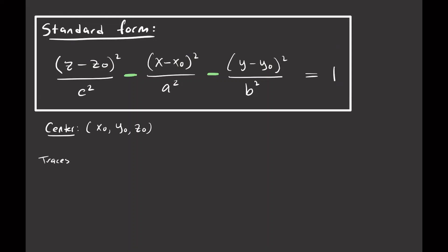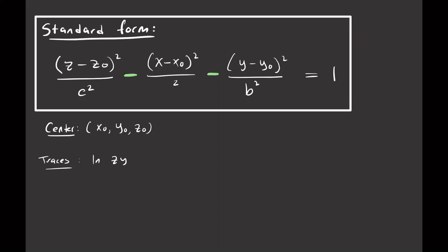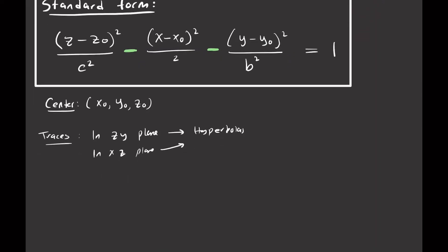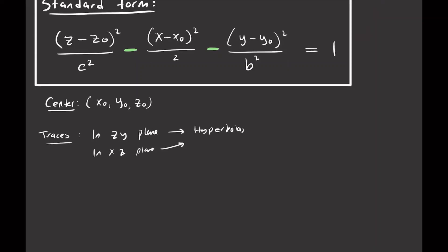Now let's look at the traces. If X disappears from the equation, we get a hyperbola in the YZ plane. Similarly, if Y disappears, we get hyperbolas in the XZ plane. If Z disappears and we look at just X and Y, modifying for the negative signs, the traces in the XY plane are going to be circles or ellipses, depending on A and B.